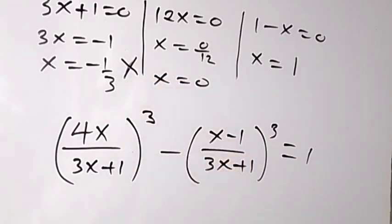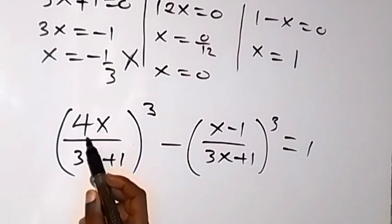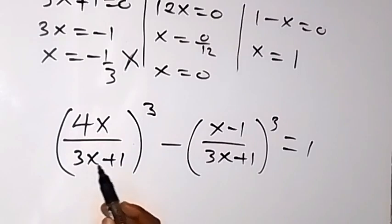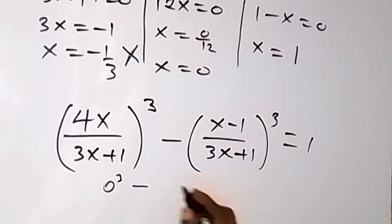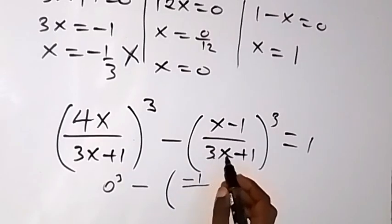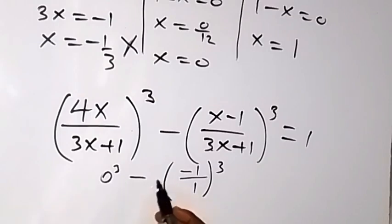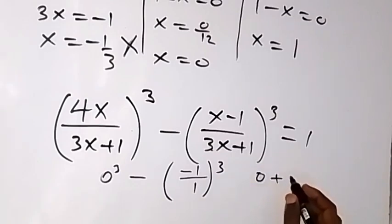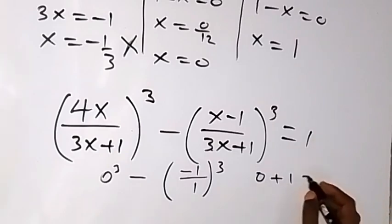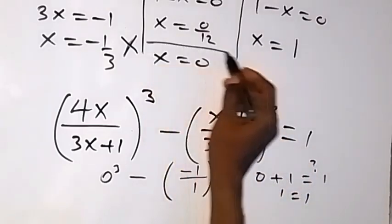For x = 0: the numerator 4(0) = 0, so (0/1)³ = 0. Then (0-1)/(3(0)+1) = -1/1 = -1, so minus (-1)³ = minus(-1) = +1. We have 0 + 1 = 1, which equals 1. Therefore x = 0 is a solution.